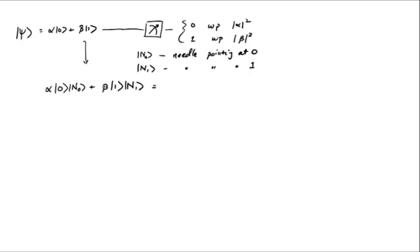In tensor product notation, what we mean is alpha|0⟩⊗|n₀⟩ plus beta|1⟩⊗|n₁⟩. But now we say: macroscopic objects are unable to maintain this superposition. Something mysterious happens and everything collapses. You cannot have a needle — which is a macroscopic object — in a superposition of being in state 0 and 1. One of these two choices is actually instantiated, with probability alpha squared or beta squared. We aren't trying to explain the mystery; we're just thinking about how it might work behind the scenes.